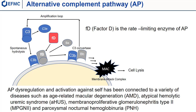So factor D plays a key role in the activation and in the amplification of the alternative pathway. The cascade reaction of the complement system continues, ultimately leading to the formation of the membrane attack complex, which leads to membrane disruption and cell lysis. Dysregulation of the alternative pathway predisposes individuals to a variety of diseases, such as age-related macular degeneration and others.